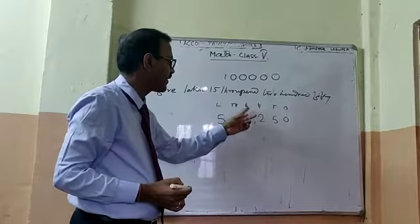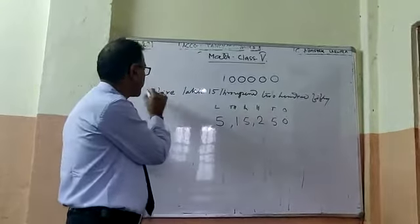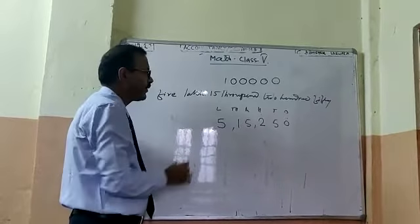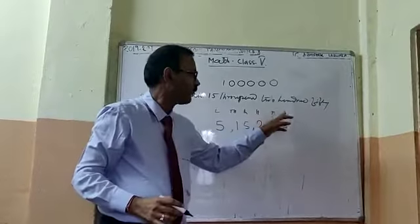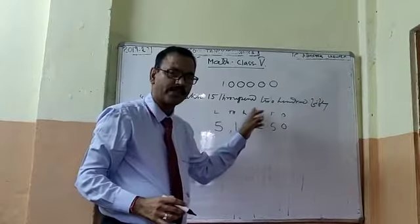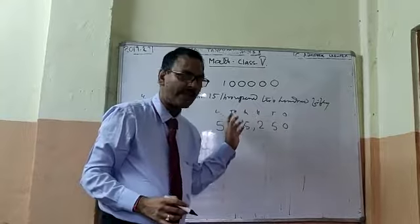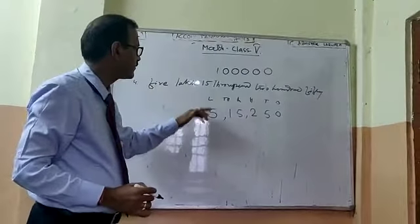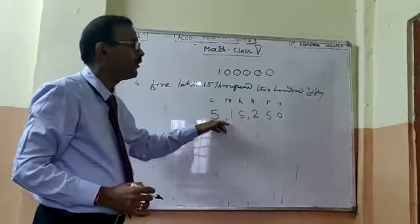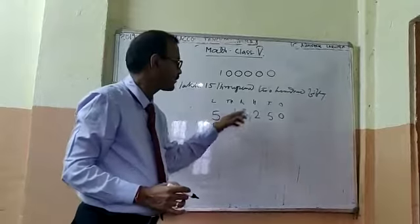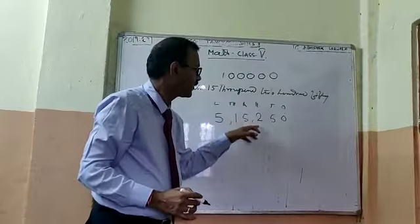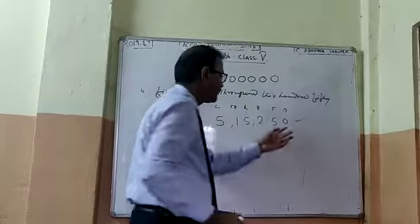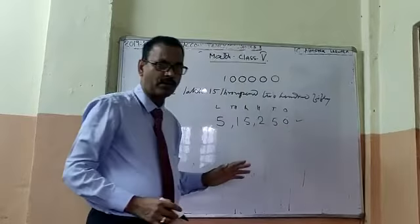So ones, tens, hundreds, thousands. Suppose your example is given and you have to write the number. First you copy the columns: ones, tens, hundreds, thousands, ten thousands, lakhs. After that, lakh, thousand, fifty thousand — this is thirty thousand — then two thousand. Comma. That is the Indian process.